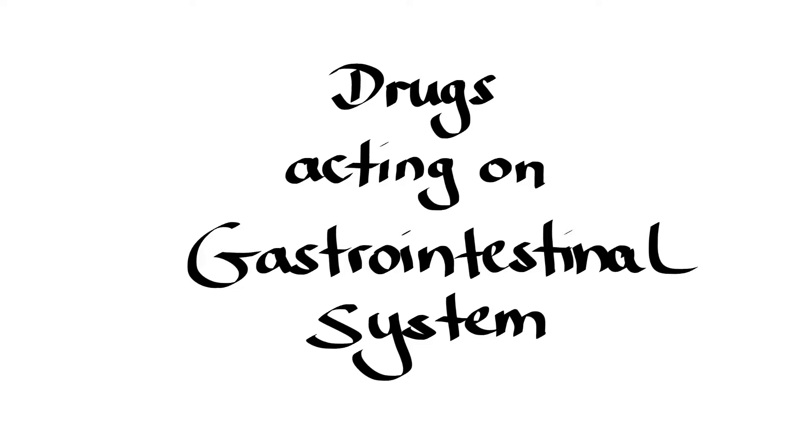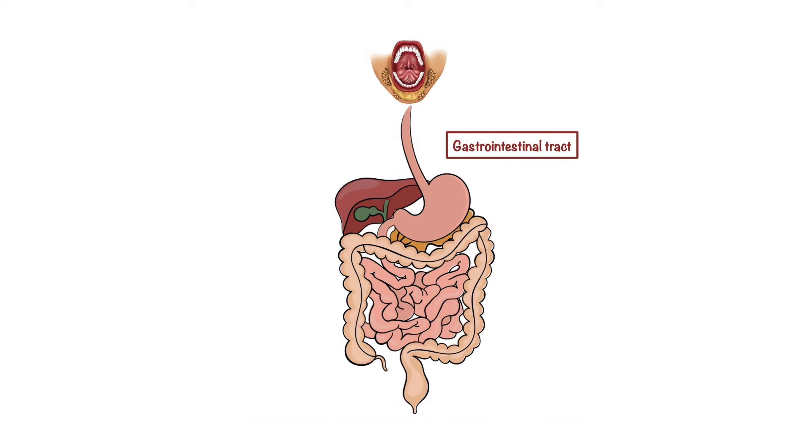The gastrointestinal tract is part of the human digestive system which includes the mouth, esophagus, stomach and intestines, plus the accessory organs of digestion such as the salivary glands, pancreas, liver and gallbladder.